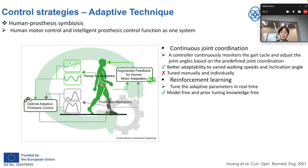This example is more common in lower-limb prostheses: using an adaptive technique is another way to increase intuitiveness. The idea is to have the system with human motor control and intelligent prosthesis control functioning as one system. The controller continuously monitors the gait cycle and adjusts joint angles based on predefined joint coordination. Although this can adapt to walking speed and inclination angle, manual tuning is needed — and to overcome this burden, reinforcement learning has been proposed and proven to be effective.